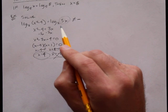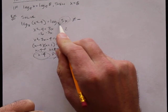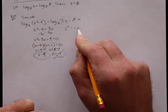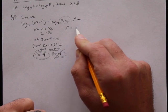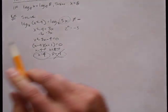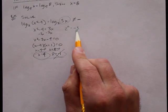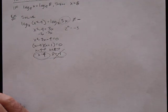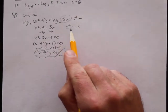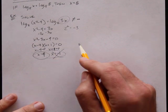That's because if we convert to exponential form, we'd have 2 to some power equals a negative number, and that isn't acceptable. There's nothing I can plug in to make this a negative 3. So x equals negative 1 is an extraneous solution and it doesn't work.